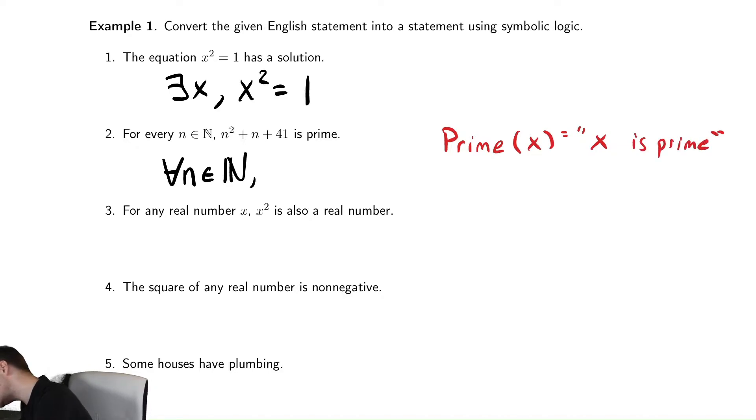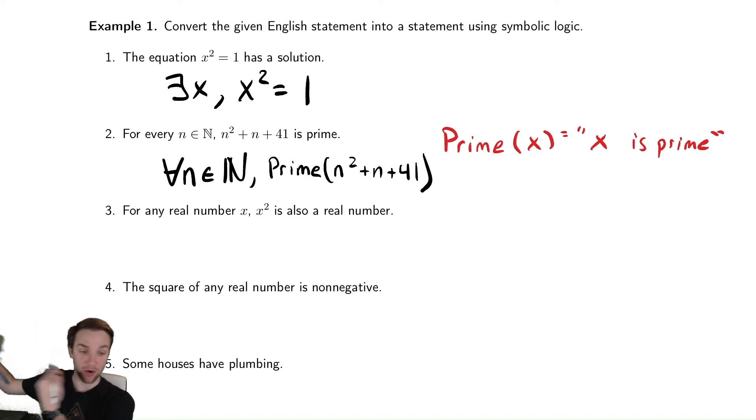So what the sentence is saying is that for every n in the natural numbers, we have that n squared plus n plus 41 is prime. And like I said, you could write down mathematically what that means. There's several different ways to define primeness for the natural numbers. So if you take a class in number theory, you'll likely talk more about that. For our purposes, we're just going to leave it in this way.